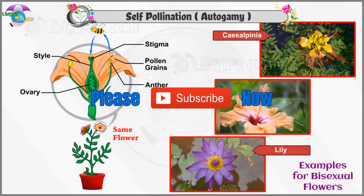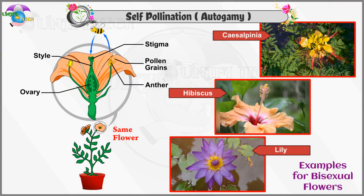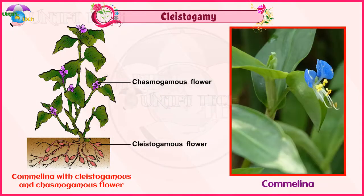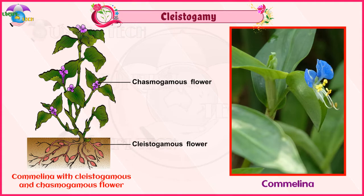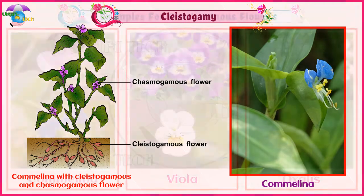In order to promote self-pollination, the flowers of plants have several adaptations or mechanisms. In cleistogamy, flowers never open and expose the reproductive organs, and thus the pollination is carried out within the closed flower.